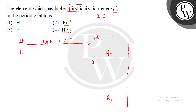This is the general trend; there are some exceptions. Similarly, if we look at the general trend going top to bottom: the number of shells increases, the nuclear-electron distance increases, and the outermost electron cannot be pulled effectively. So Z effective decreases. If the nuclear pull is reduced, the electron is removed more easily, so ionization energy decreases top to bottom.